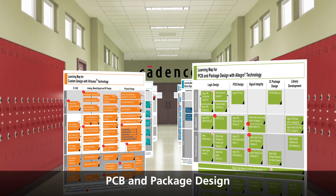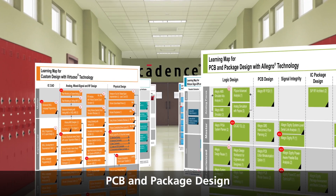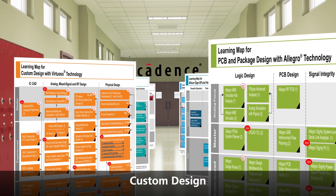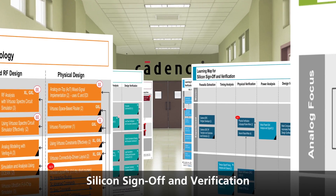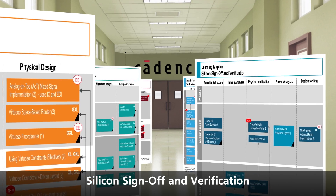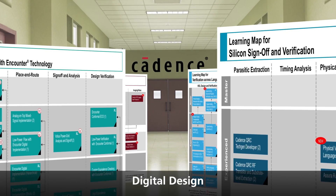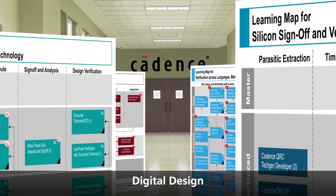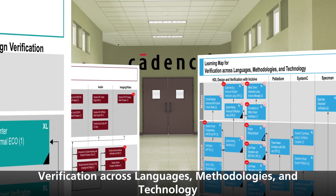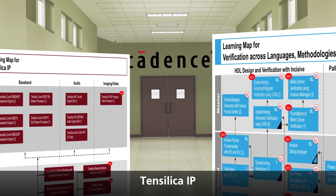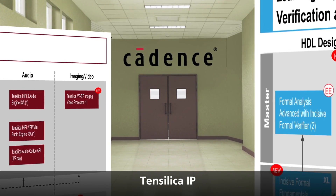Cadence Training helps you develop the skills you need to advance in today's competitive job environment. The six training service learning maps provide a high-level view of all the training courses in a curriculum at a glance. The learning maps also indicate the length of each course and the delivery methods available for the course.